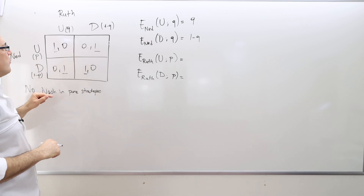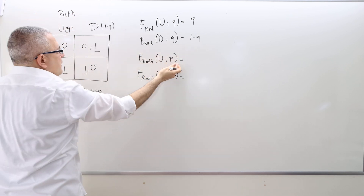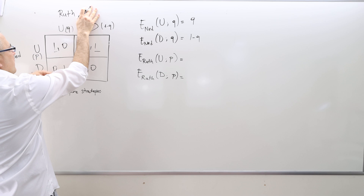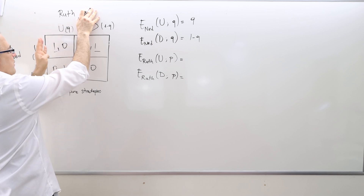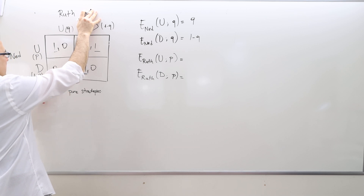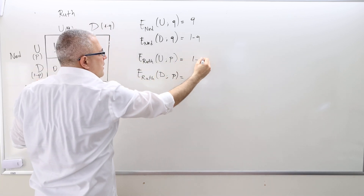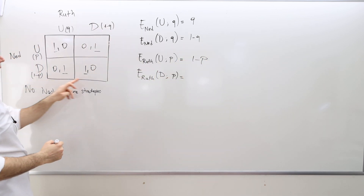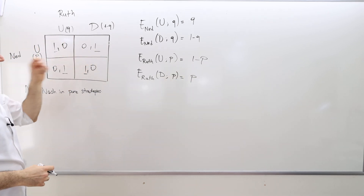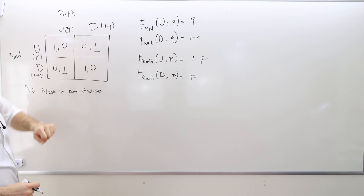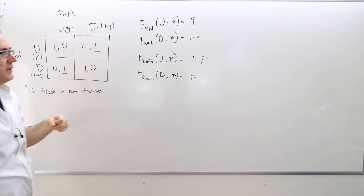For Ruth: if she's choosing up, I concentrate on that column and look at the second numbers. She gets 0 if Ned goes up, so she gets 1 only if her opponent chooses D, which happens with probability 1 minus P. And if Ruth plays D, she gets 1 only if Ned plays up, which happens with probability P. So her expected payoff of playing U is 1 minus P, and of playing D is P.